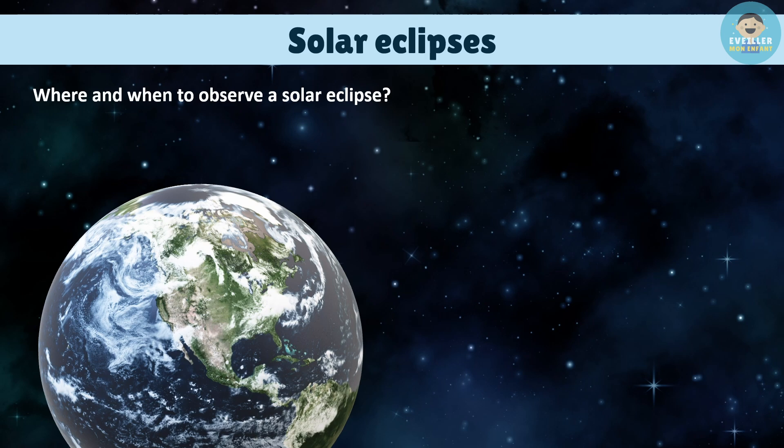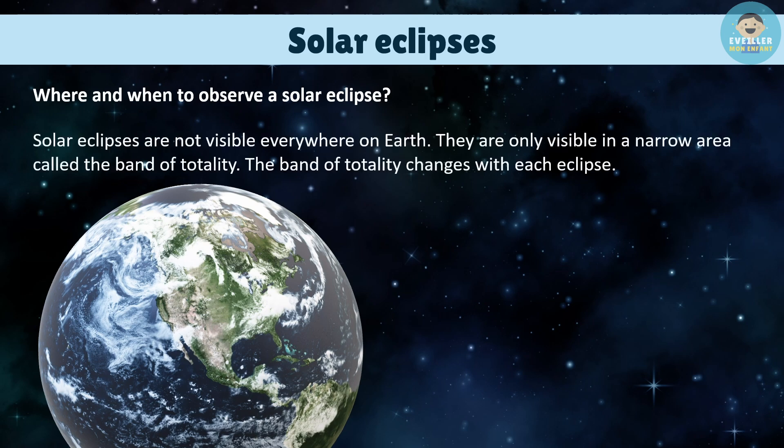Where and when to observe a solar eclipse. Solar eclipses are not visible everywhere on Earth. They are only visible in a narrow area called the band of totality. The band of totality changes with each eclipse.